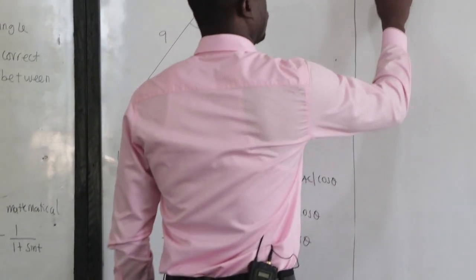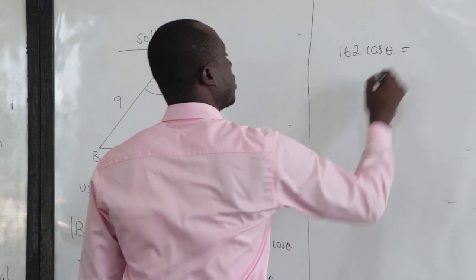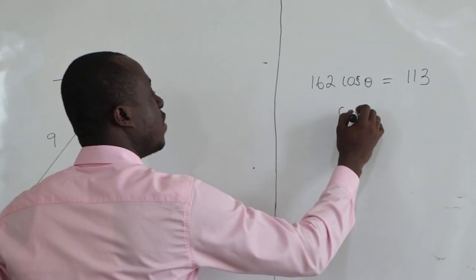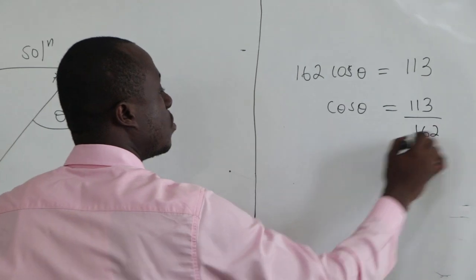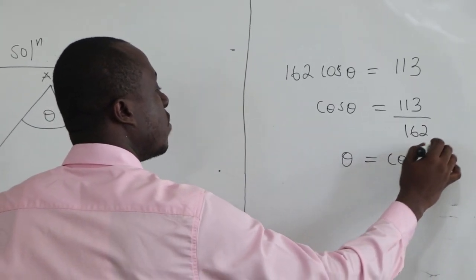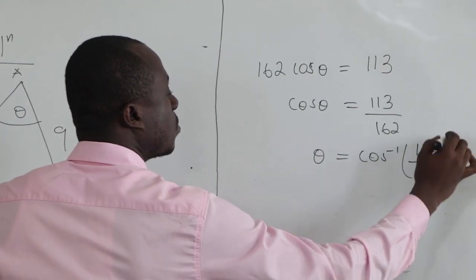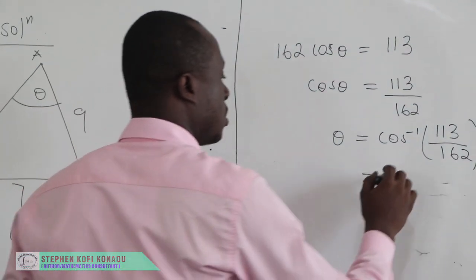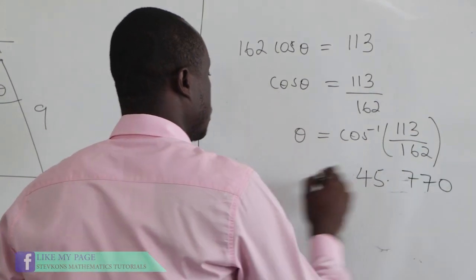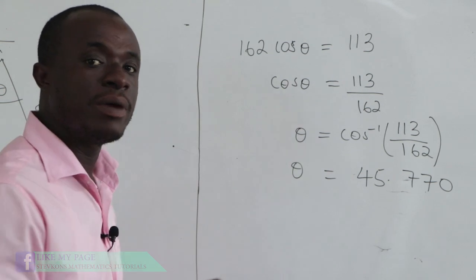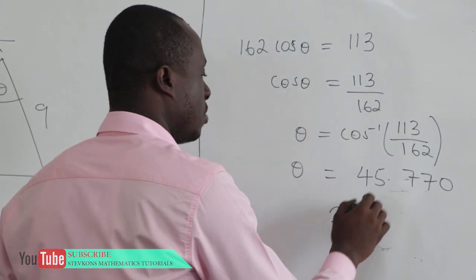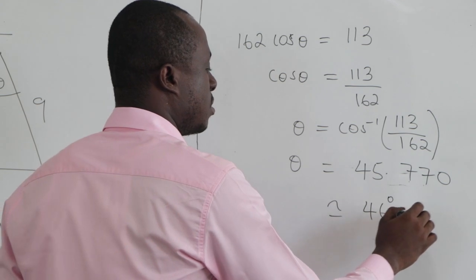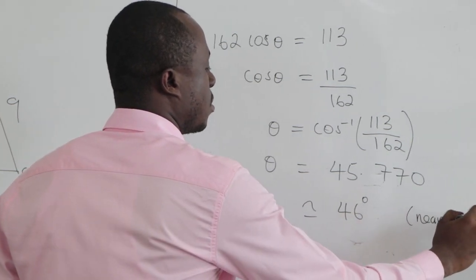So we have 162 cos theta equal to 113. We want to find theta, so we divide both sides by 162: cos theta equals 113 over 162. Therefore theta equals cos inverse of 113 over 162, which is 45.770 degrees. The question says to the nearest degree, and since the digit after 45 is 7, we round up to 46 degrees.